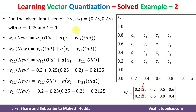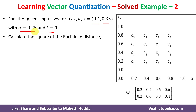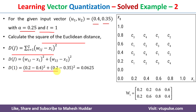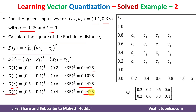Now we consider the second input vector: (0.4, 0.35). It also belongs to class 1, and alpha = 0.25. We calculate the square of the Euclidean distance using the same formula. d1 = (w11 − x1)² + (w21 − x2)² = 0.0625. Similarly, d2 = 0.1025, d3 = 0.2425, and d4 = 0.0425.